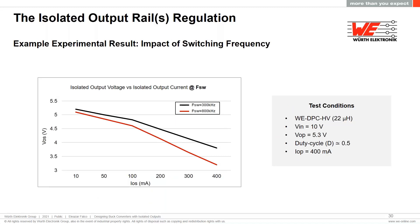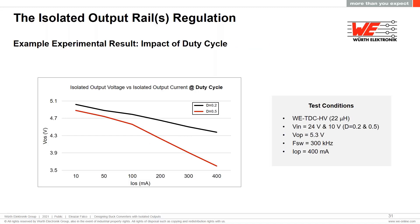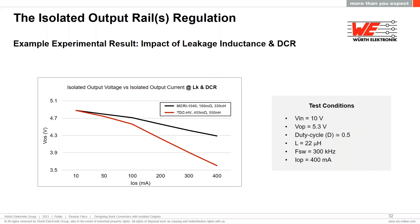Here we can see the impact of switching frequency on isolated output voltage regulation. The duty cycle is set at 50% and the primary output load current is 400 mA. For a higher switching frequency of 800 kHz, the isolated output voltage regulation slightly degrades compared to 300 kHz. We can also see the impact of duty cycle: for a low duty cycle of 20% versus a higher duty cycle of 50%, output voltage regulation clearly worsens as the duty cycle increases, as expected.